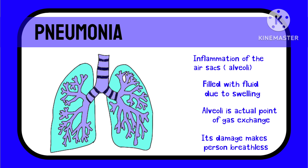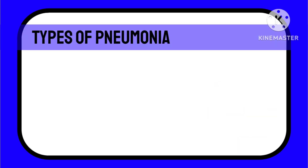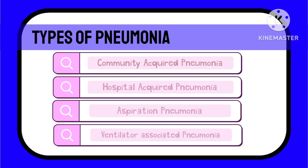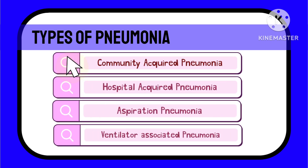Now, this pathology almost remains the same for all types of pneumonia, but pneumonia has been classified majorly by its causes, because if the cause is known, the infective organism can be predicted and treatment can be started accordingly with all the extra precautions. Pneumonia is broadly classified into four main types: community acquired pneumonia, hospital acquired pneumonia, aspiration pneumonia, and ventilator associated pneumonia.